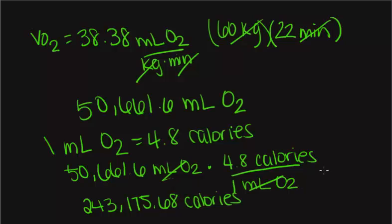To make this an easier number, we can divide by 1,000, since there are 1,000 calories in 1 kilocalorie. By doing that, we get 243.18 kilocalories.